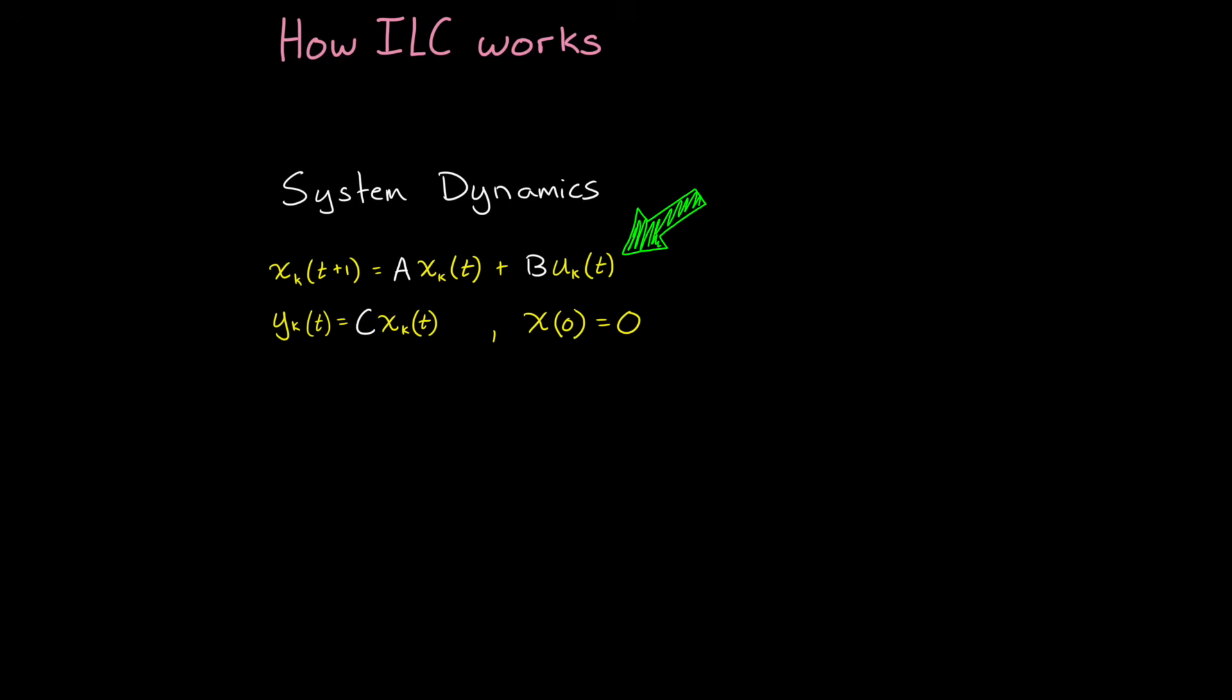So the input u at time t comes into the system and then this generates an output y at time t. And now we can take the input and output across the entire iteration and package them into two matrices, capital YK and capital UK. And these capture the whole sequence for the inputs and outputs of one iteration.